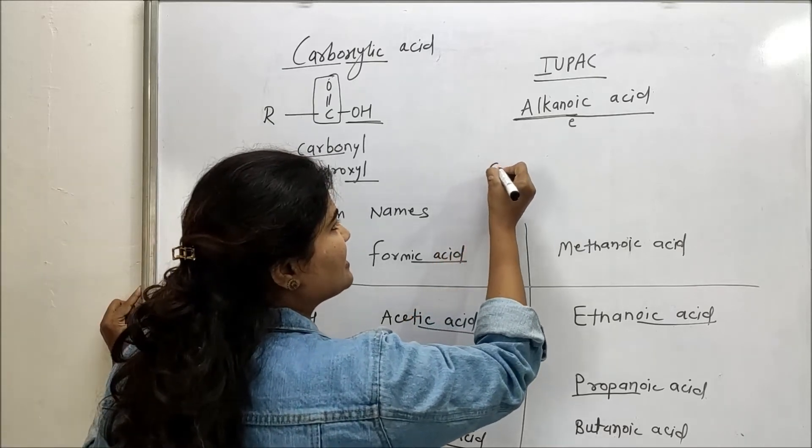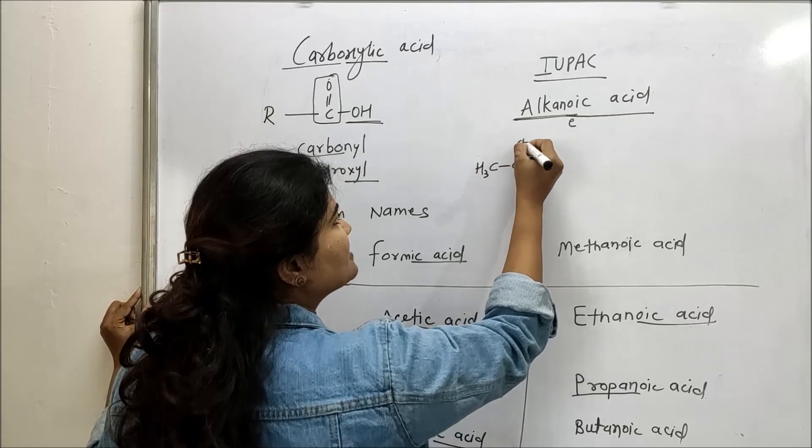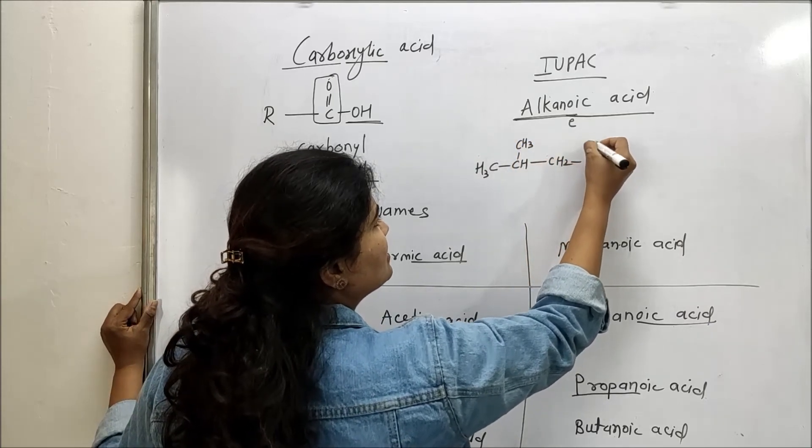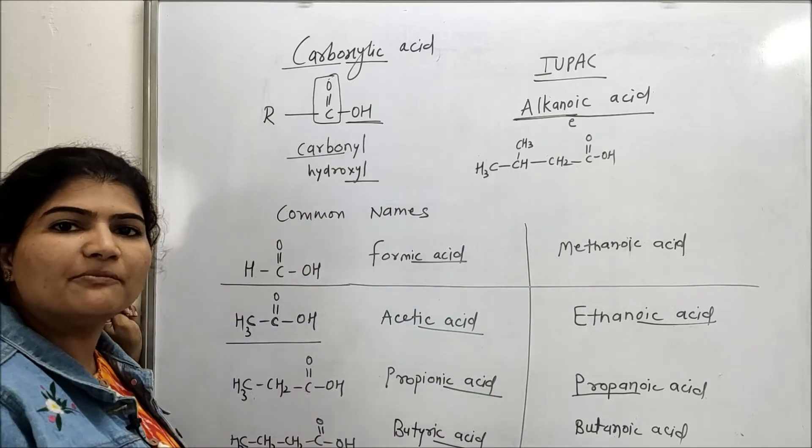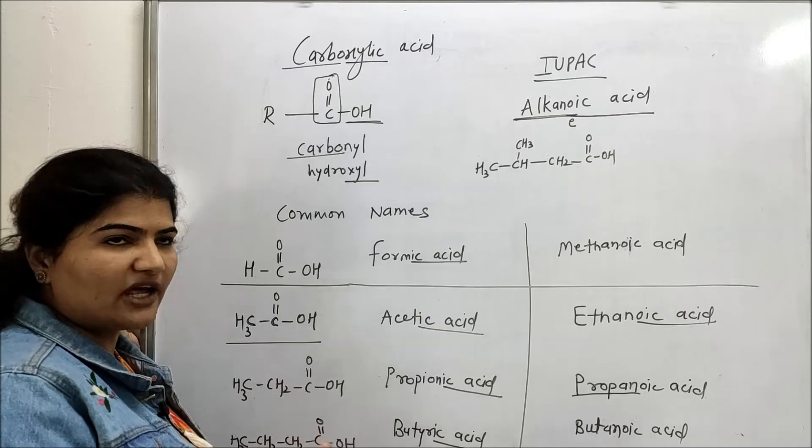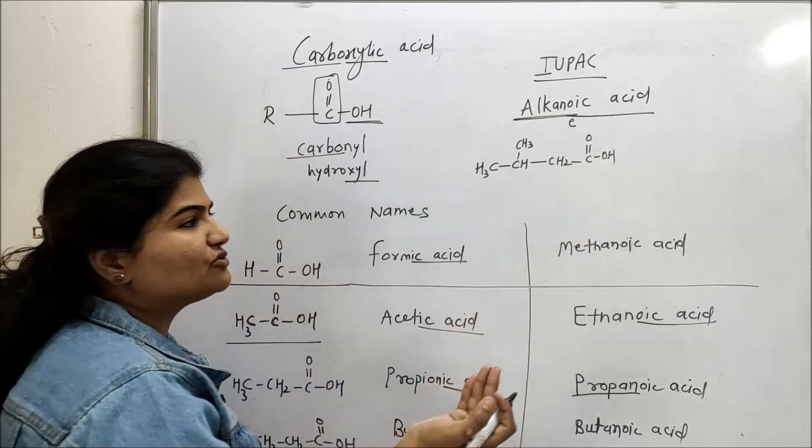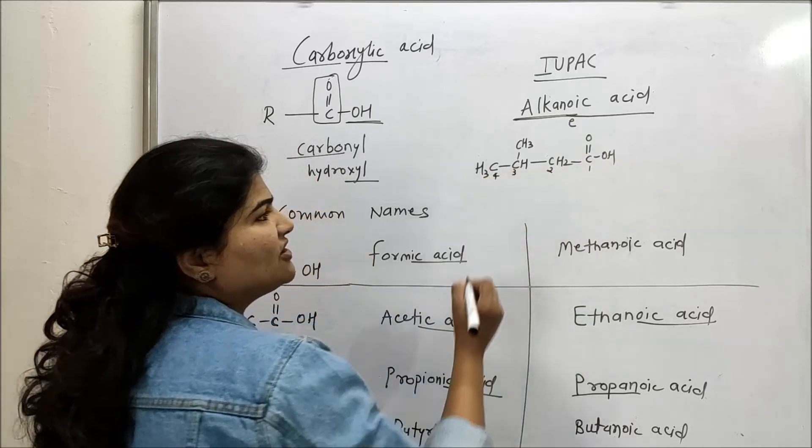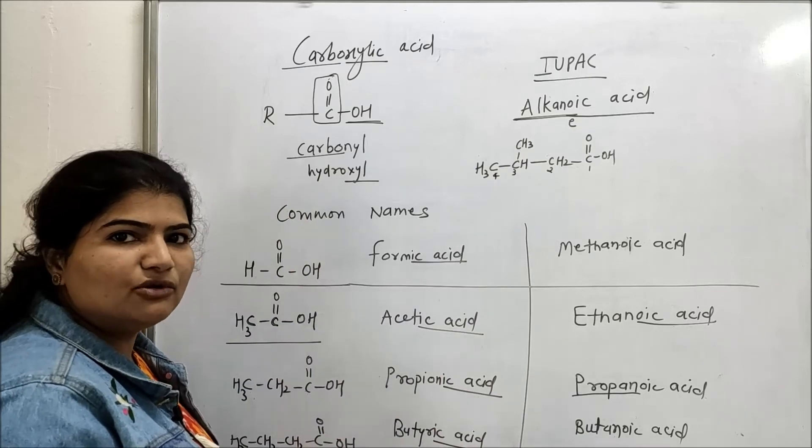Now let's consider some other examples like CH3, CH with CH3 branch, CH2, COOH. What we are going to do for this, we will be applying our common rules for IUPAC. And as you can see, it is a terminal functional group. So obviously, we have to start numbering the longest chain from this end. One, two, three, four.